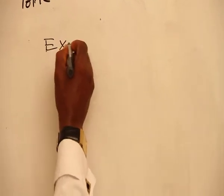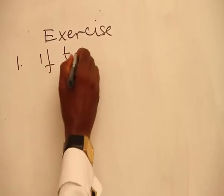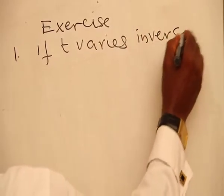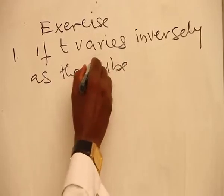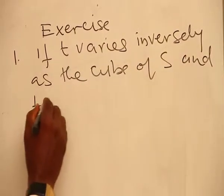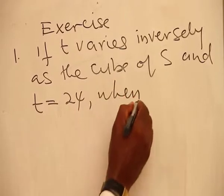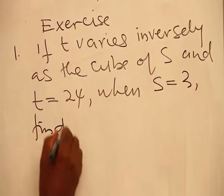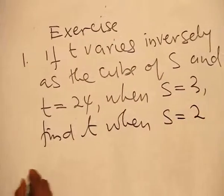Exercise. Number 1. If T varies inversely as the cube of S, and T is equal to 24 when S is equal to 3, find T when S is equal to 2.